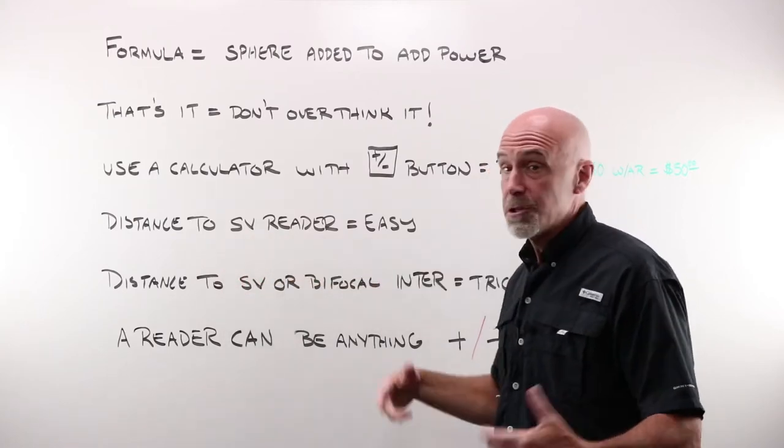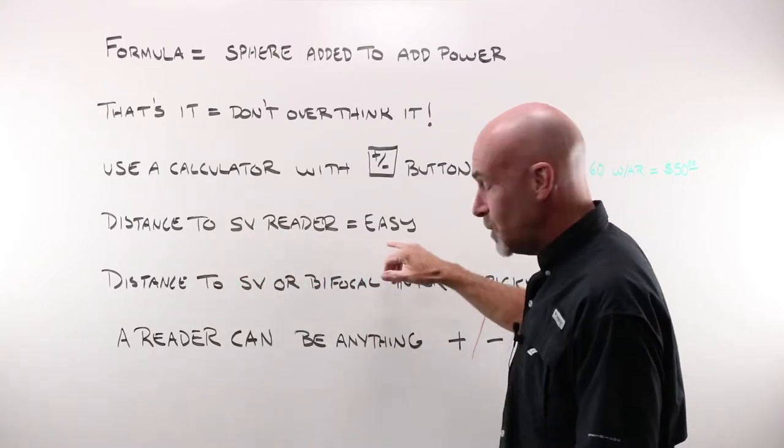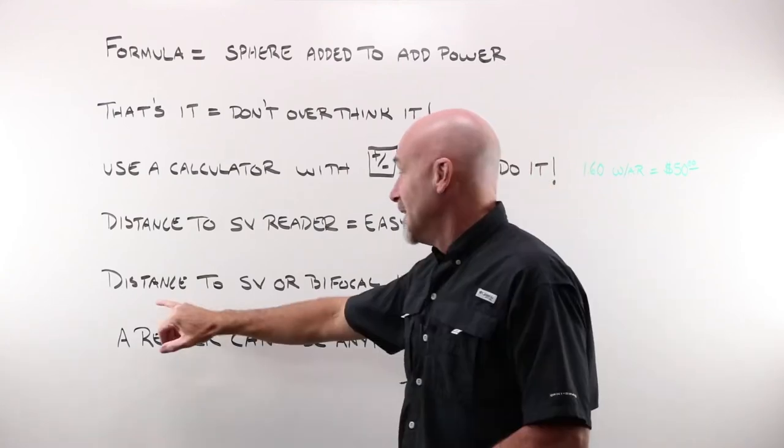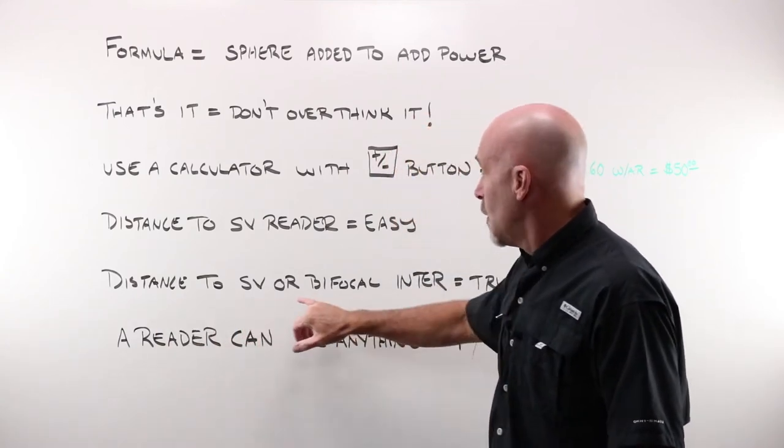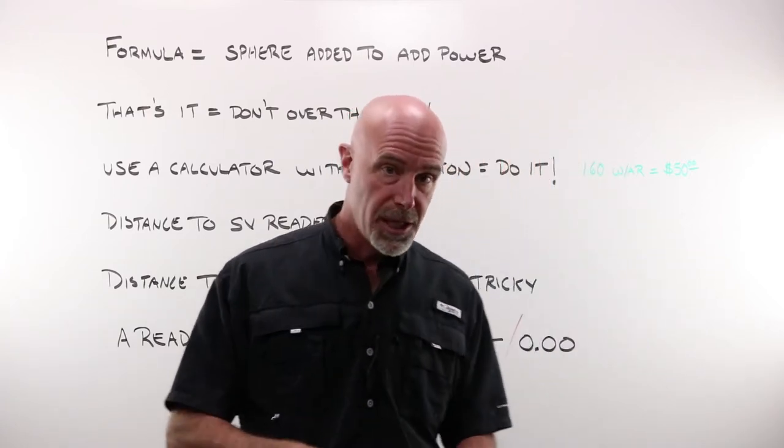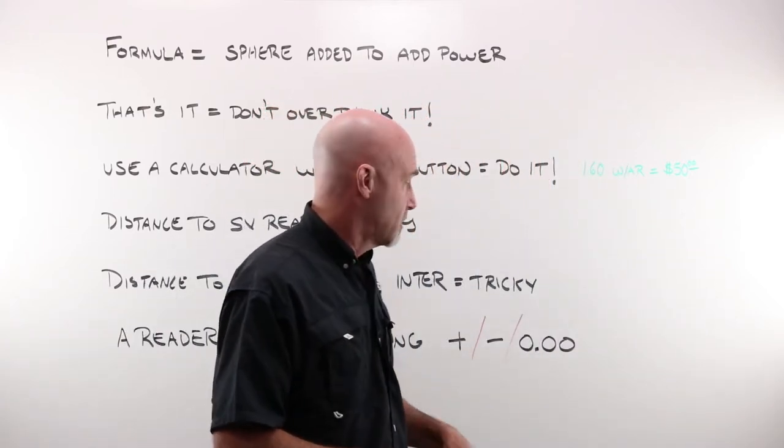Distance to single vision readers. We're gonna run through a bunch of examples really pretty easy. And you know that is not something that I say very often. Distance to single vision or a bifocal intermediate. Those can be pretty tricky. That's why we're gonna save that for the next video.